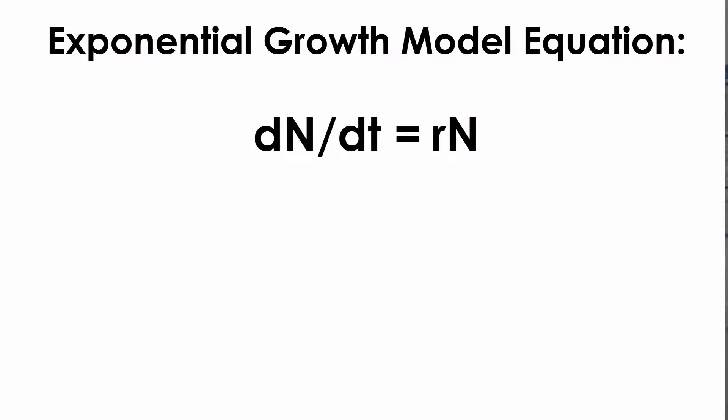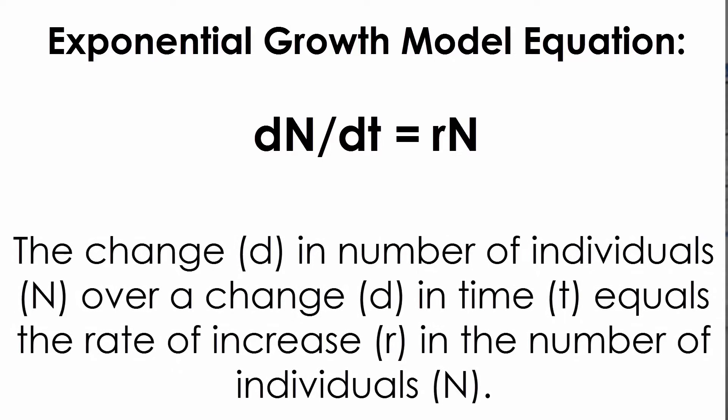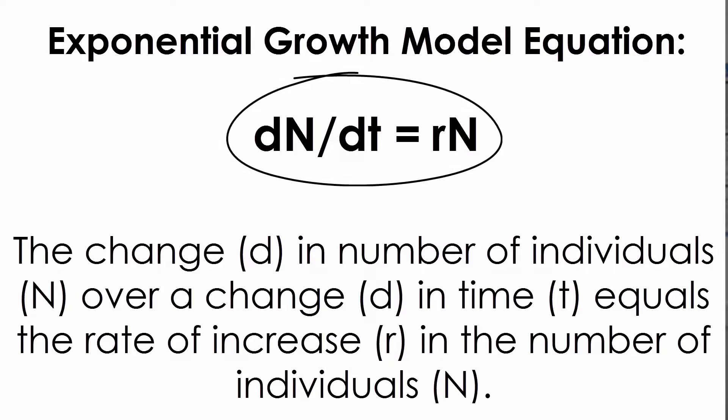Scientists often describe models with equations. The exponential growth model equation looks like DN over DT equals RN. Here's how to translate the equation into words: the change (D) in number of individuals (N) over a change (D) in time (T) equals the rate of increase (R) times the number of individuals (N). My name is Leroy Cresswell. I hope you have found this hands-on demonstration to be both informative and enjoyable, and thanks for watching.